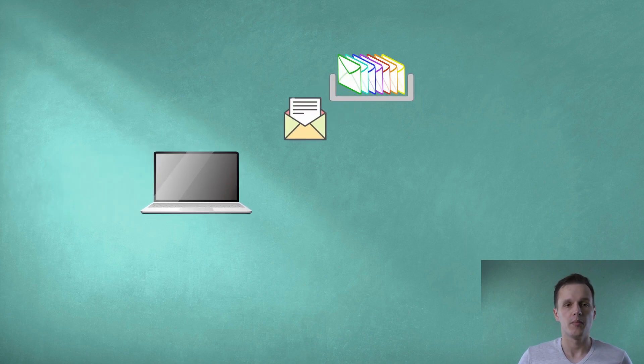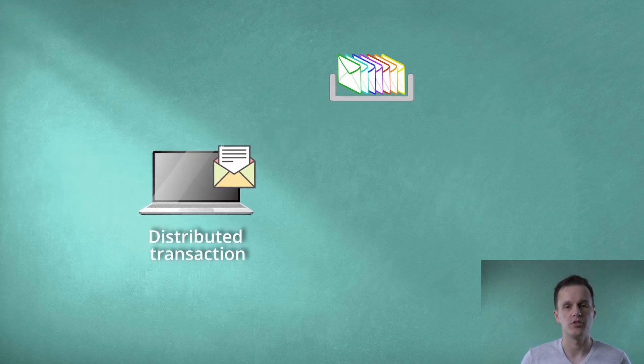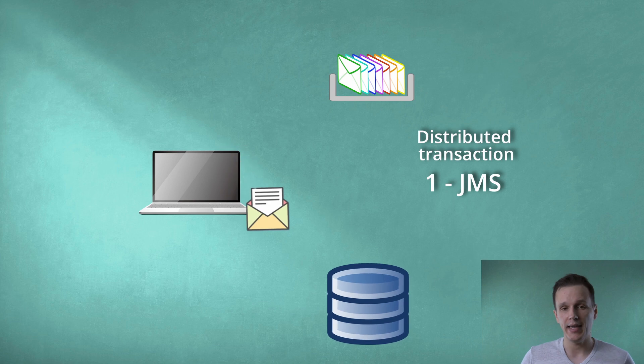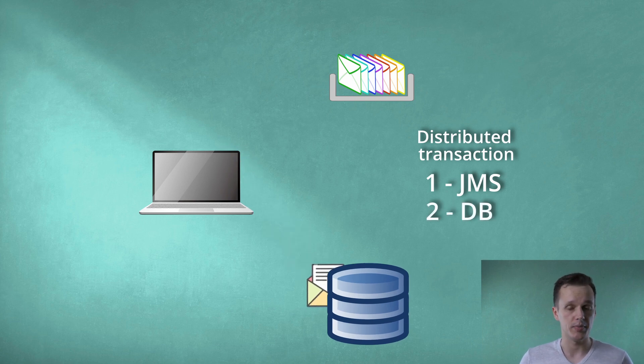Here, two-phase commit comes to the stage. When a message is read from the queue, the application server starts a distributed transaction where the JMS driver becomes the first actor. The transaction is later propagated to a database when a processed result is ready to be committed. The commit consists of two phases. First, all participants are asked whether everything is okay and if they are ready to perform a commit. If everything goes right, the second phase initiates a final commit, both to the database and message queue. This approach guarantees that reading, processing, and writing will be completed atomically.